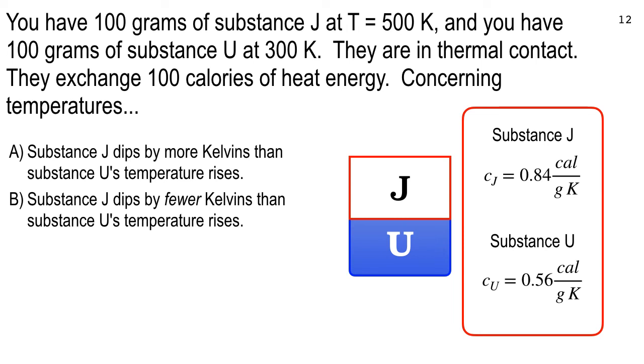100 calories, that's going to dip substance J. Substance J loses 100. It dips by a certain temperature. And that 100 calories goes into substance U. So substance U responds by going up in temperature. So does substance J dip more than U rises or is it the other way around? And definitely talk it over with your neighbors. If you're in this class and you're not sitting with somebody that you can talk to, talking to somebody is always helpful. Especially if you're trying to savvy something for the first time. Okay, 10 seconds to vote. 10, 9, 8, 7, 6, 5, 4, 3, 2, 1, 0.